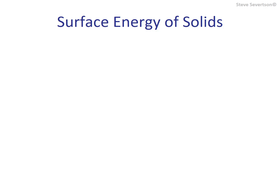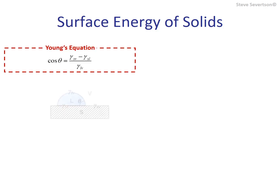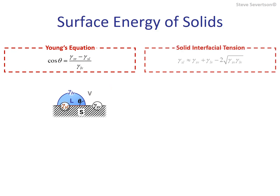For the remainder of this chapter, we are looking at methods for estimating the surface energy of a solid. The surface tension of a liquid and the contact angle for that liquid on the solid can be measured directly, but according to Young's equation, this leaves two unknowns: the surface energy of the solid and the solid-liquid interfacial energy. An expression for estimating the interfacial energy was developed in a previous lecture, and will be used throughout the rest of this chapter.